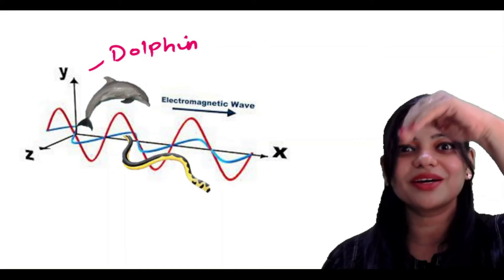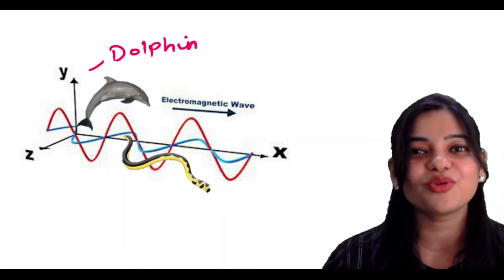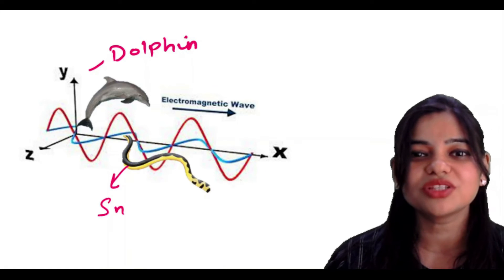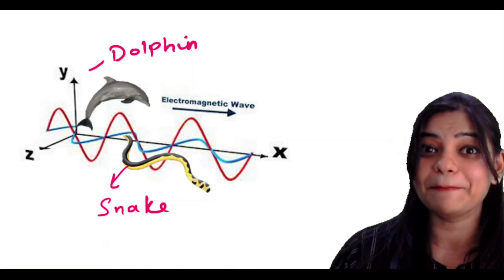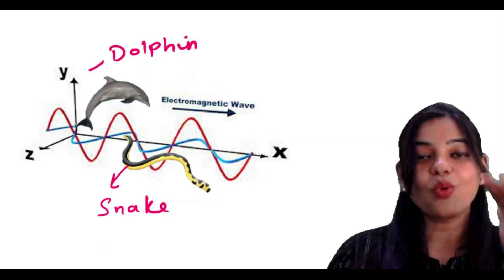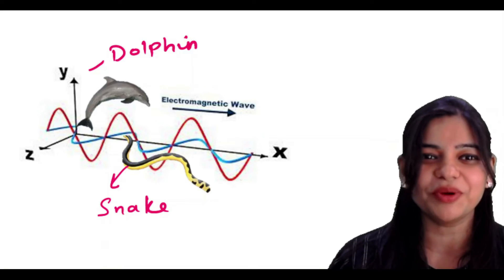The red line is going like dolphin, up to right, up to right. And the blue line is going like snake, slithering. So motion of electromagnetic waves are in electrical field and magnetic field which are perpendicular to each other. One is like a dolphin and one is like a snake.